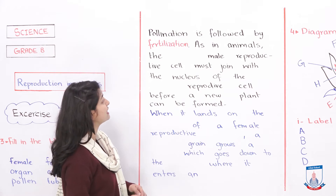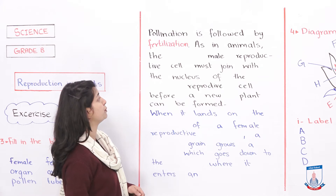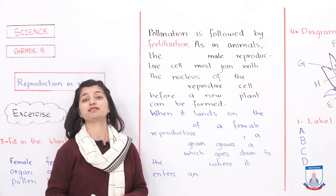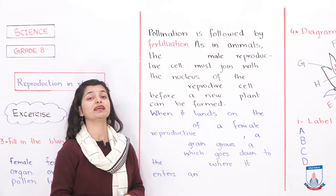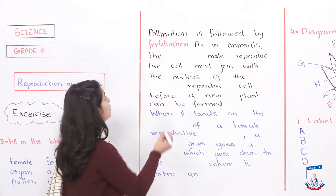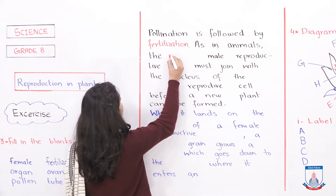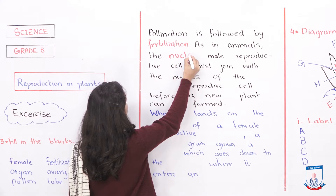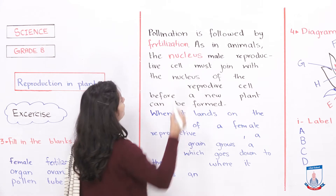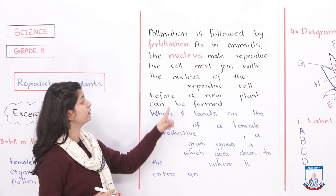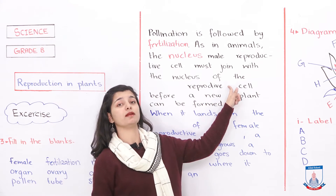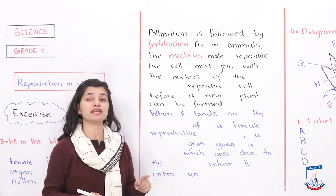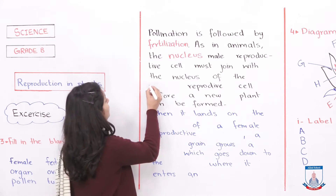As in animals, the dash of the male reproductive cell must join with the nucleus of the dash reproductive cell. The nucleus of the male reproductive cell — so you write 'nucleus' here. And the male nucleus joins with which reproductive cell? Female. So you write 'female' for that blank.